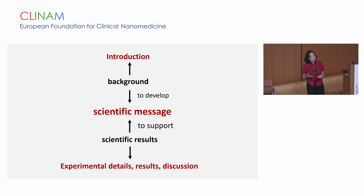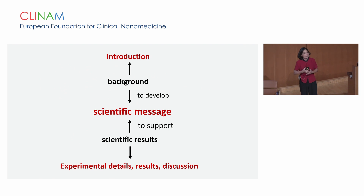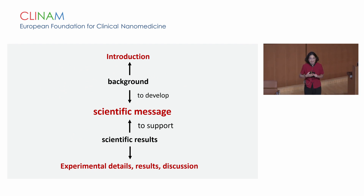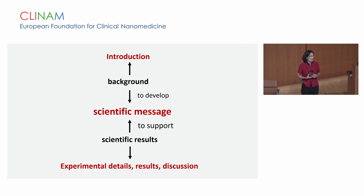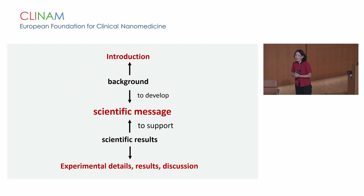Usually the scientific message can come from two approaches. The first is that you make your hypothesis, you design your experiment, you get your results, you analyze your results, you distill your message, and you share it with everybody. That's your publication.